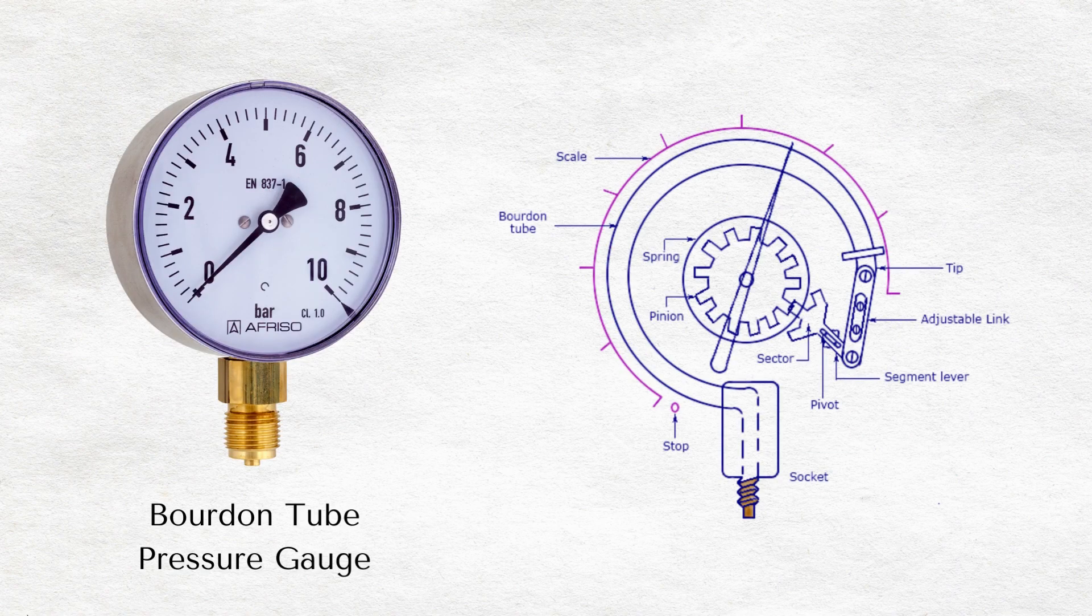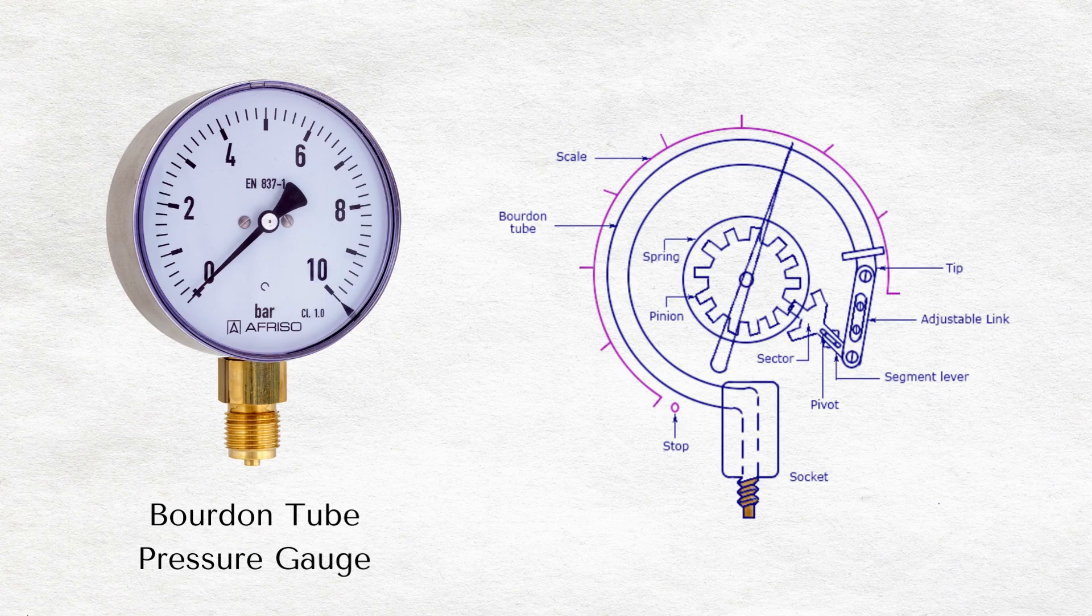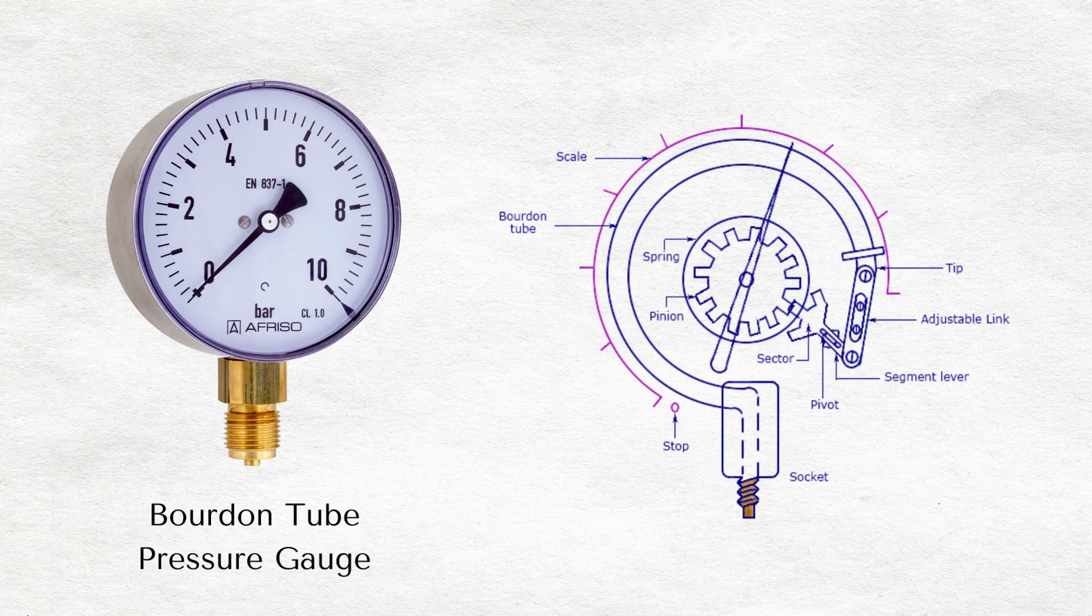Bourdon tube pressure gauge. A Bourdon tube pressure gauge has an elastic tube that is soldered or welded on one end into a socket. A change in pressure causes a deflection in the tube. This is proportional to the applied pressure and is sent to a rotary gear with a pointer. The operating principle of a Bourdon pressure gauge is that a curved tube will straighten when pressure is applied. This is indicated by a dial or digital readout.